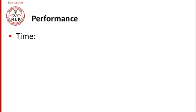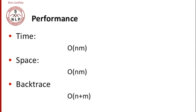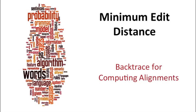What's the performance of this algorithm? In time, it's order NM, because our distance matrix is of size NM and we're filling in each cell one time. The same is true for space. The backtrace, in the worst case, if we had N deletions and M insertions, we'd have to go N plus M. We have to touch N plus M cells, but not more than that. That's our backtrace algorithm for computing alignments.